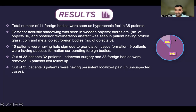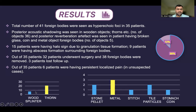This graphical representation shows that out of 100%, 88% of retained foreign bodies showed posterior acoustic shadow and only 12% showed posterior reverberation artifact. Among the wooden splinter and thorn foreign bodies, thorn is the most common foreign body studied on ultrasound in this study, and they appear radiolucent on X-rays. Among radiopaque foreign bodies on initial X-ray, metal is the most common foreign body studied on ultrasound in this study.